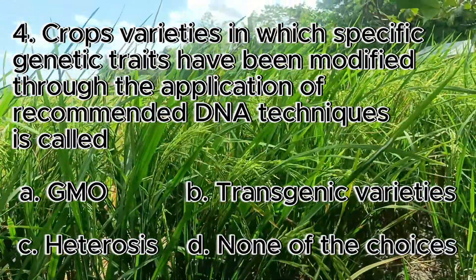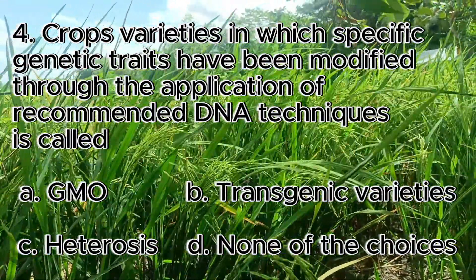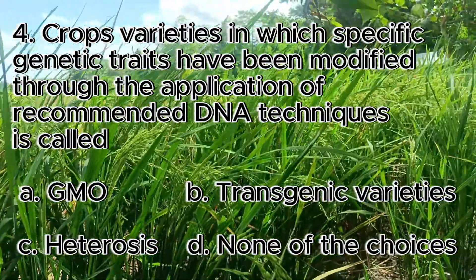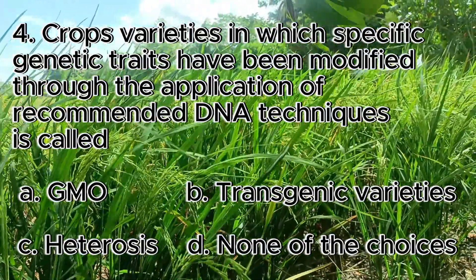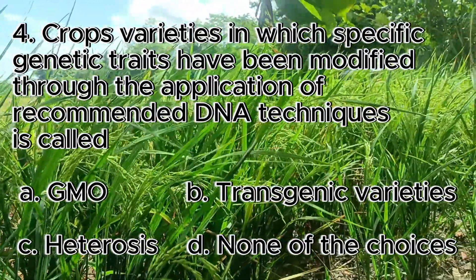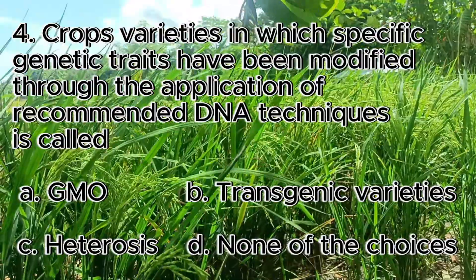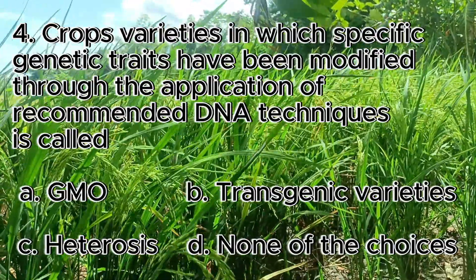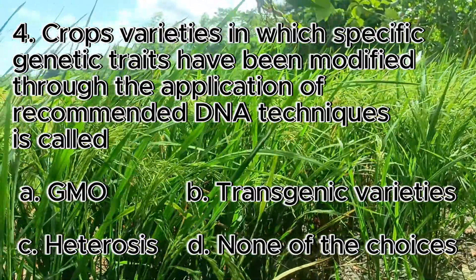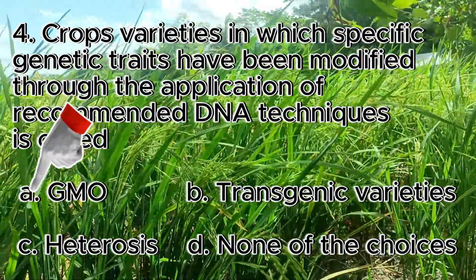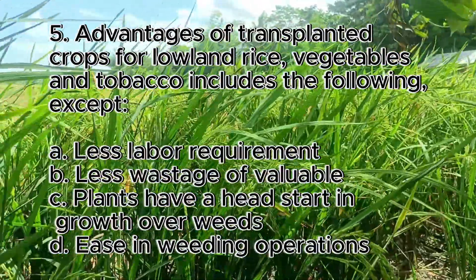Number 4. Crop varieties in which specific genetic traits have been modified through the application of recombinant DNA techniques is called. A. GMO, B. Transgenic varieties, C. Heterosis, D. None of the choices. The answer is letter A, GMO.